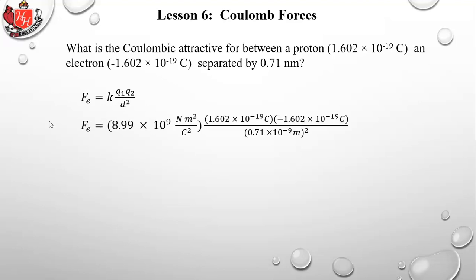K is 8.99 × 10⁹ N·m²/C². Q1, the proton, is +1.602 × 10⁻¹⁹ C. Q2, the electron, is −1.602 × 10⁻¹⁹ C. The distance is 0.71 nm, which is 0.71 × 10⁻⁹ meters — and that entire quantity must be squared. So you're squaring the coefficient 0.71, squaring 10⁻⁹, and squaring the unit meters.